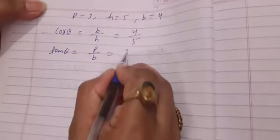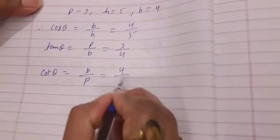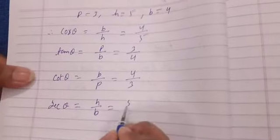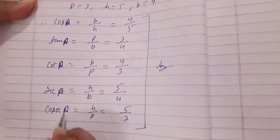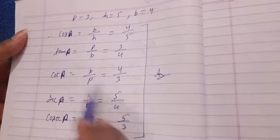Then tan A equals p by b, which is 3 by 4. Cot A is the reciprocal of tan A, so 4 by 3. Sec A equals h by b, which is 5 by 4. And cosec A equals h by p, which is 5 by 3. These are the values of all other trigonometrical ratios. Sin A was given as 3 by 5 and we found cos A, tan A, cot A, sec A, and cosec A.